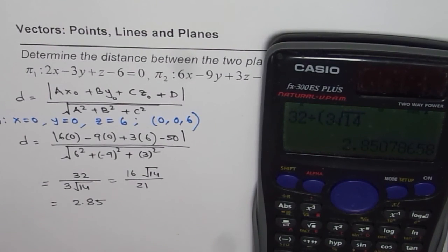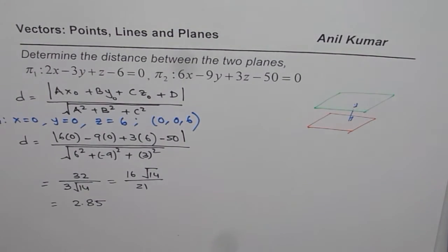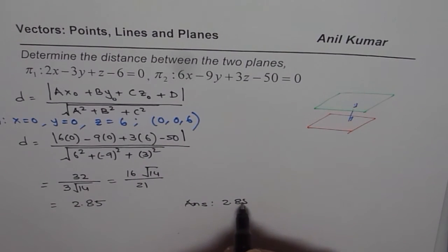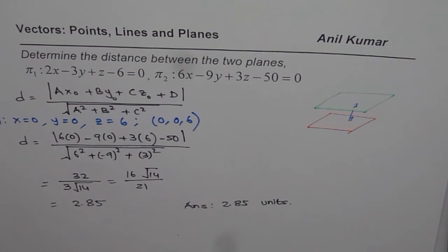So 2.85 is our distance between these two planes. So we can write down our answer as 2.85 units. I hope the method is straightforward and clear. Thank you and all the best.